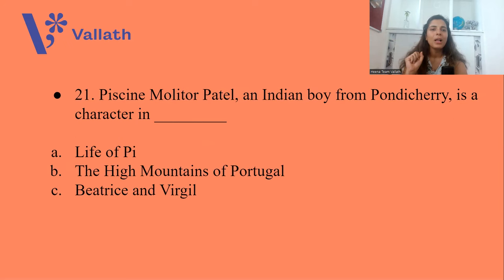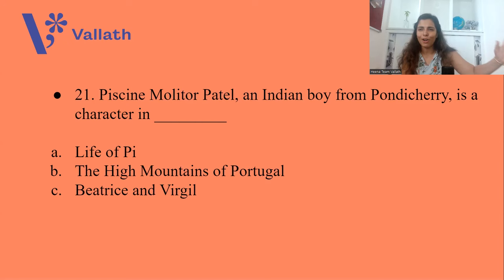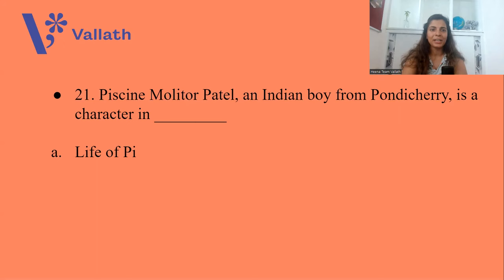Question twenty-one: Piscine Molitor Patel, an Indian boy from Pondicherry, is a character in A. Life of Pi, B. The High Mountains of Portugal, or C. Beatrice and Virgil. I have done this summary — the answer is Life of Pi. Piscine Molitor Patel is called Pi, a boy who was lost at sea along with a Royal Bengal tiger.